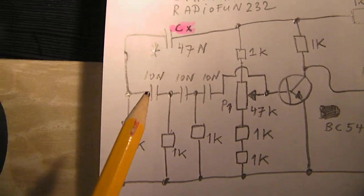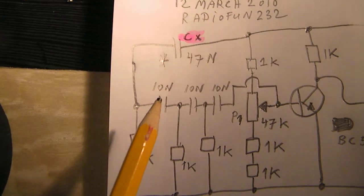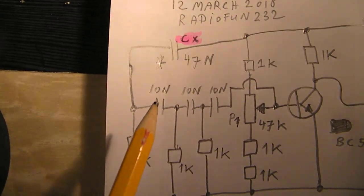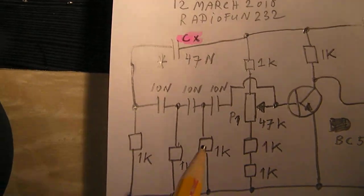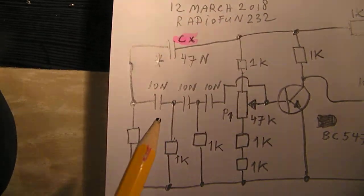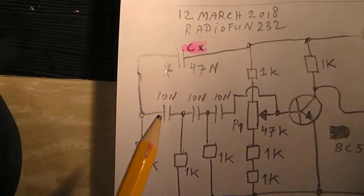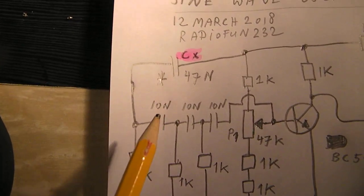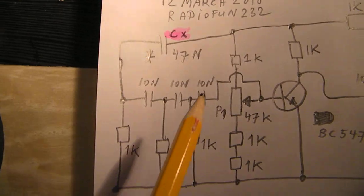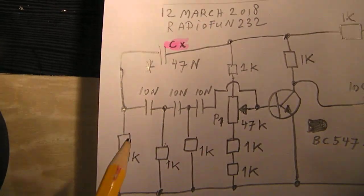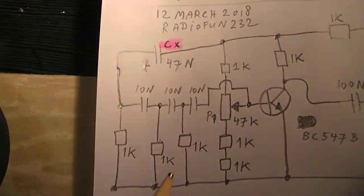When you change for instance here these three capacitors to 100 nanofarad, so a factor 10, the frequency goes down substantially. And when you diminish them with a factor 10 to 1 nanofarad, the frequency goes up. So these three capacitors are responsible for the frequency.